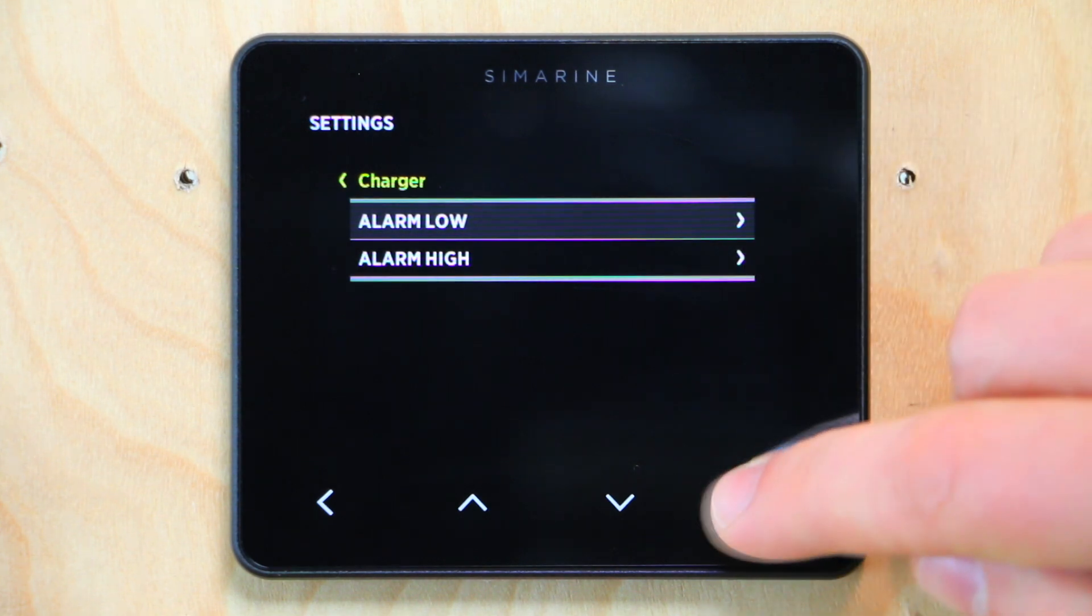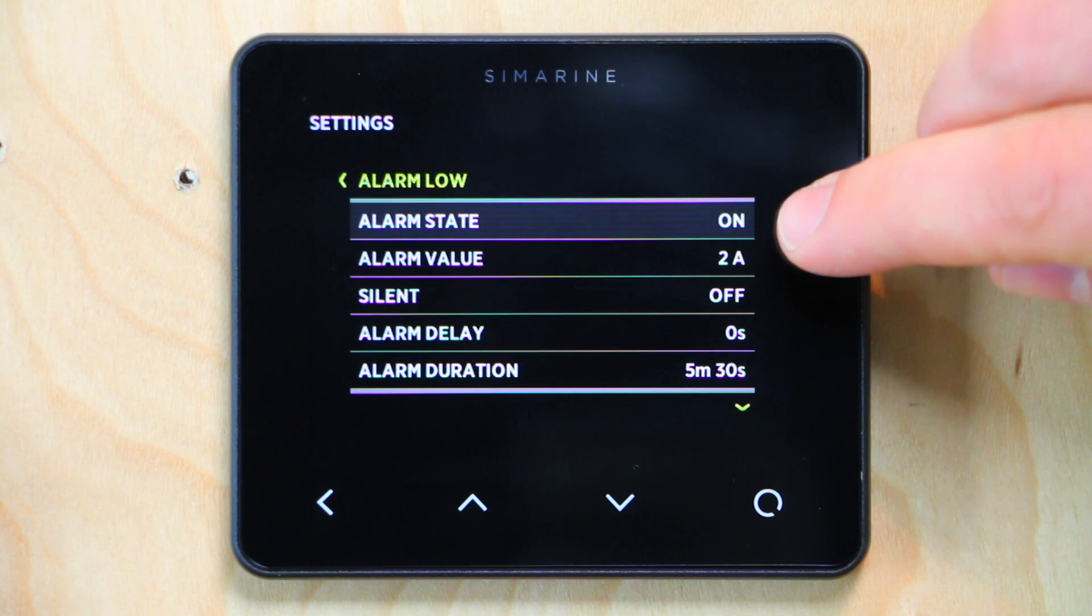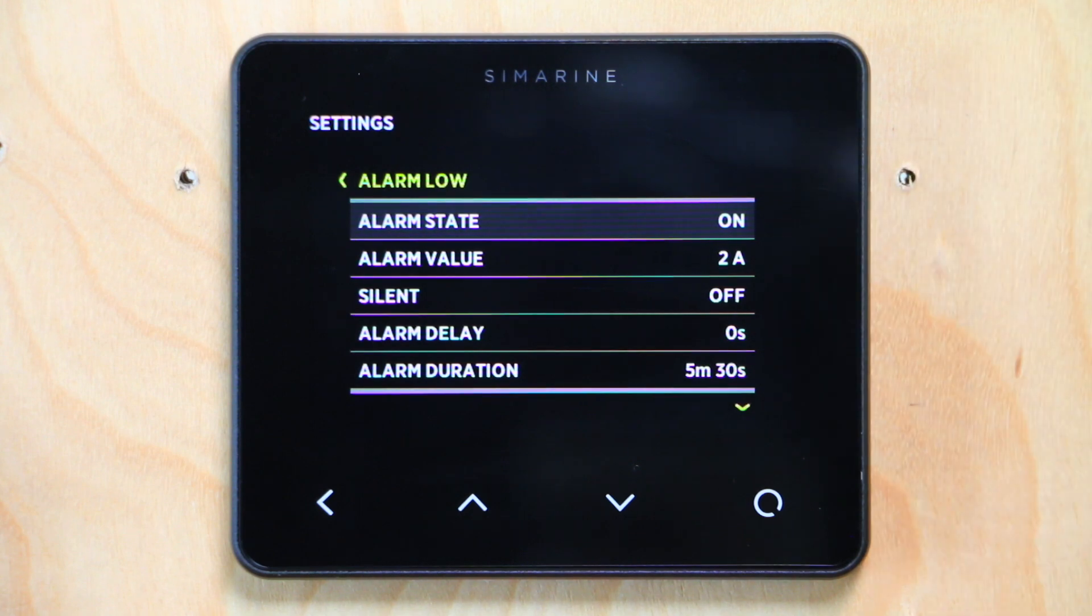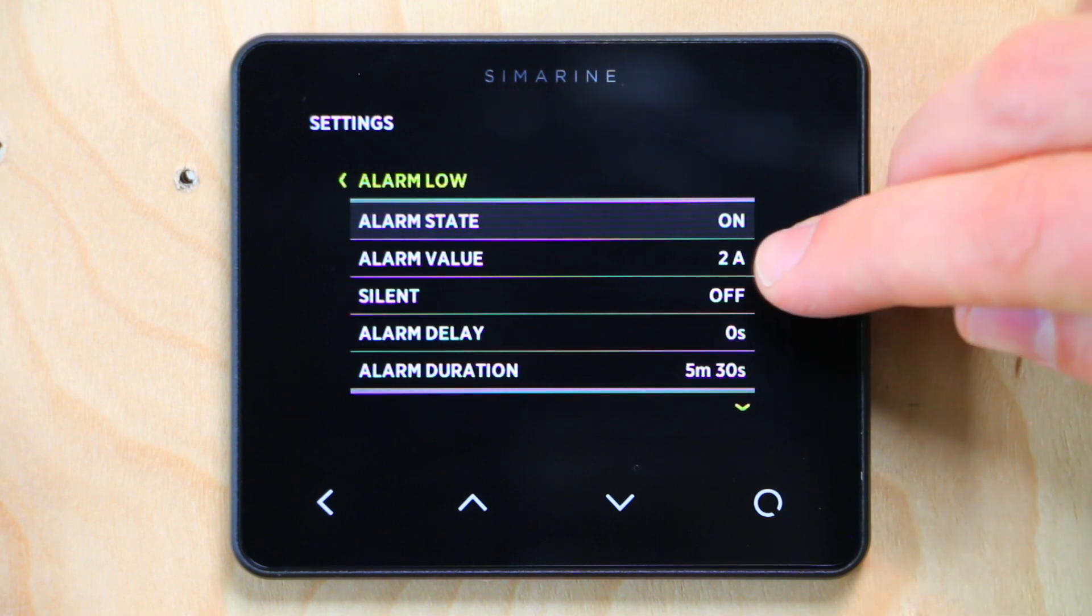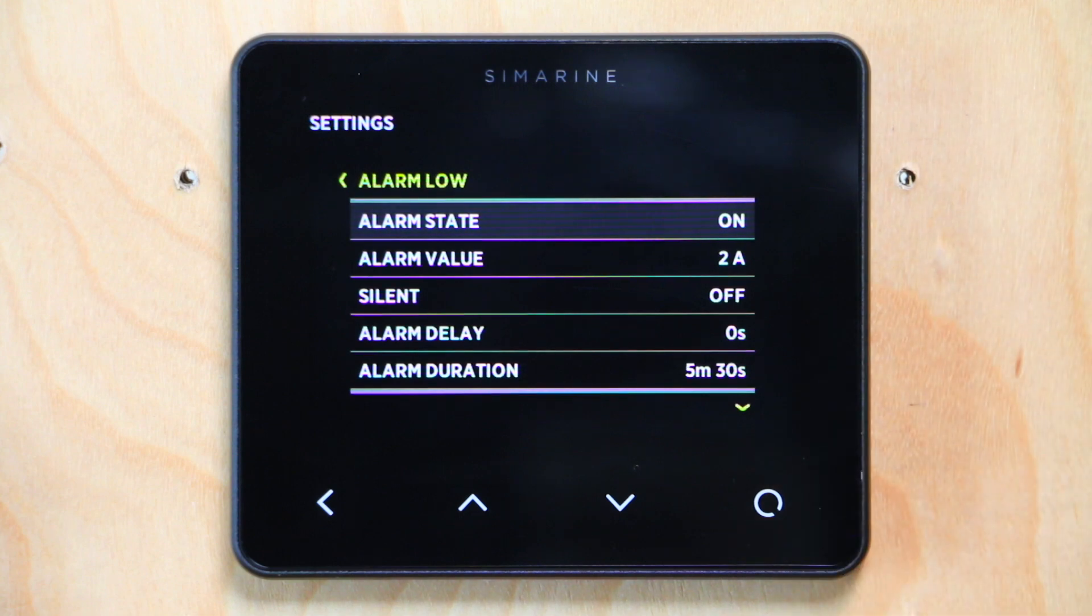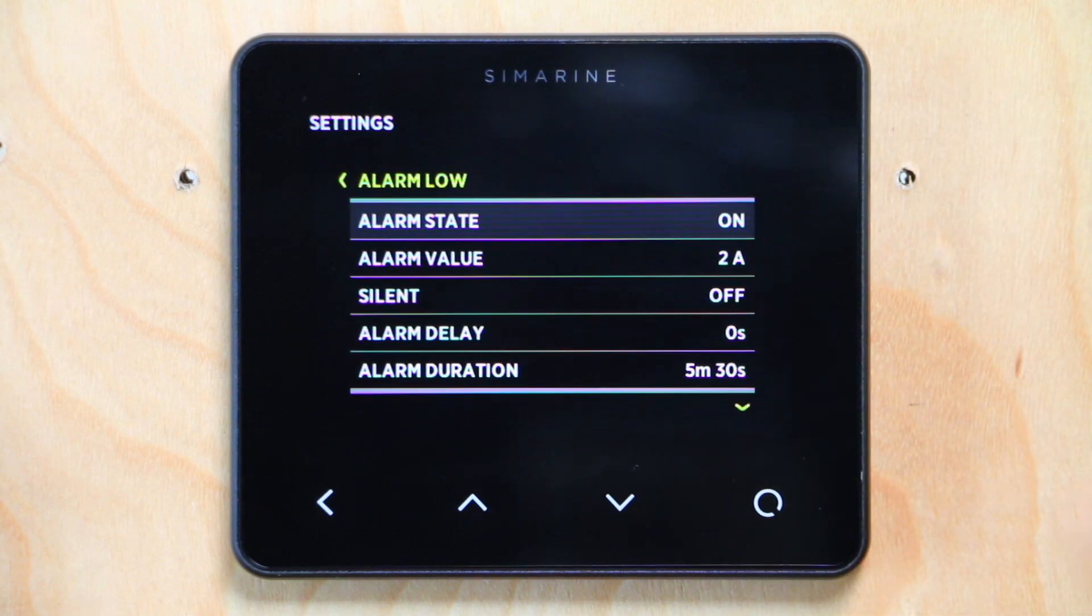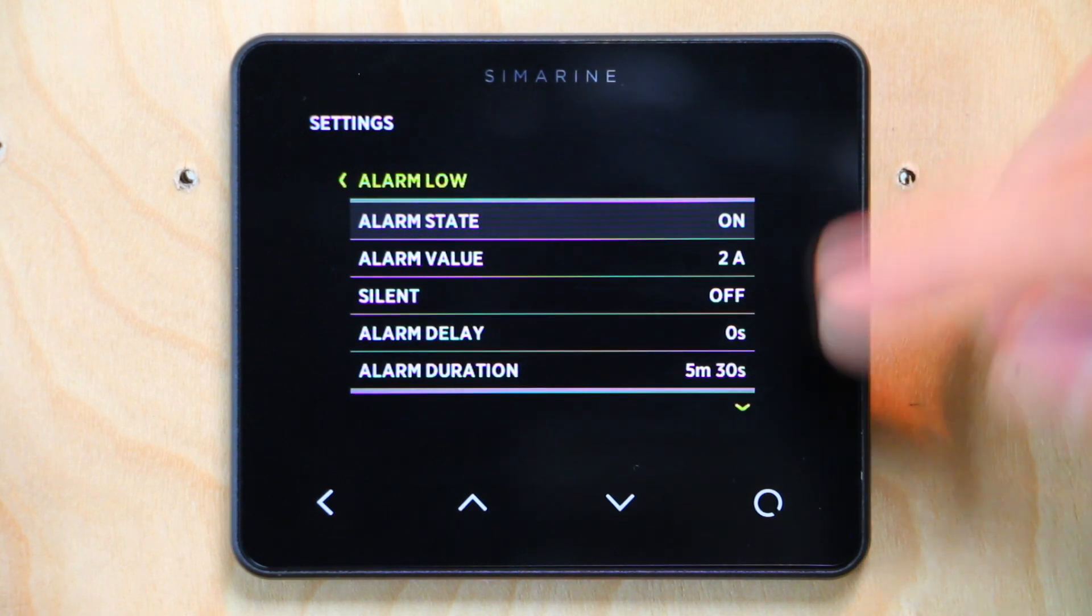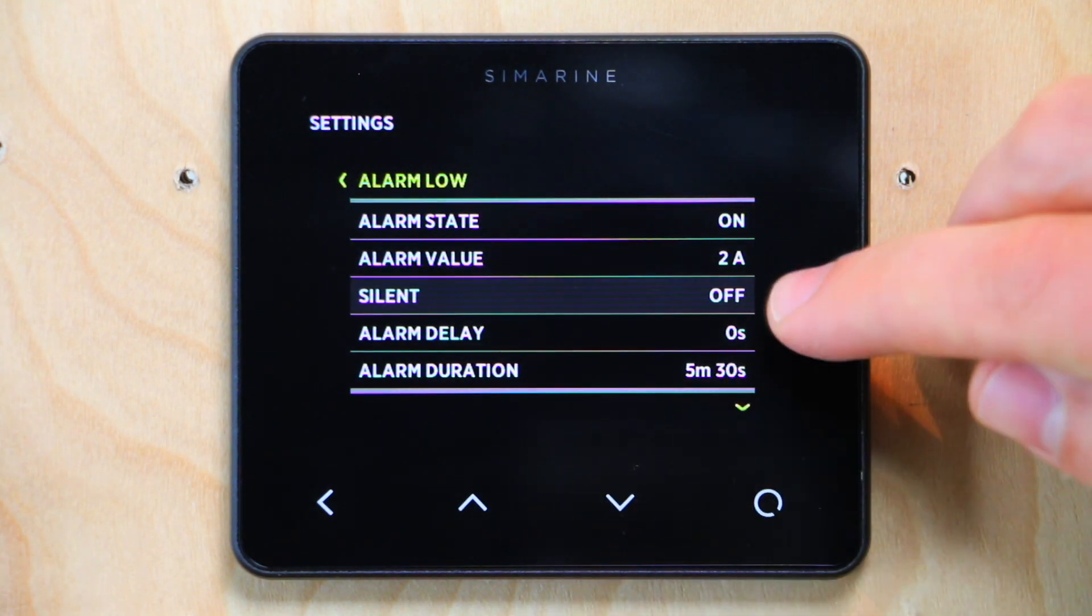Let's go into charger and alarm low is the alarm that I've set up. You can see alarm state is on. By default, this will say off. You just need to turn it on to say yes, I want to use this alarm. Alarm value, I set that at two amps. That's the threshold at which if it goes below that, the alarm goes off. If this was an alarm high programming, that would be the value at which if it went above two amps, it would go off. Whether you're on low or high, you're going to set a value, and if it goes below or above that value, it's going to go off into an alarm.